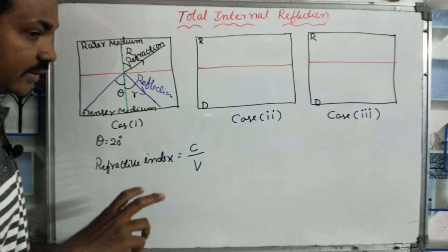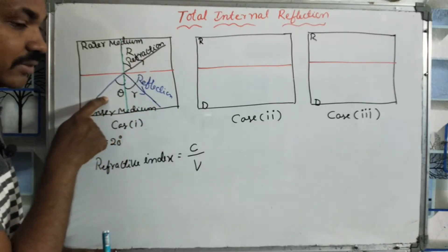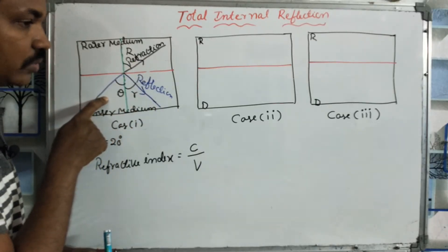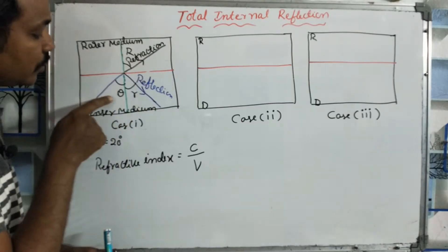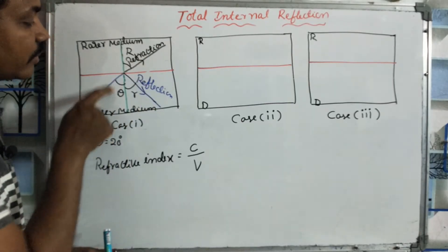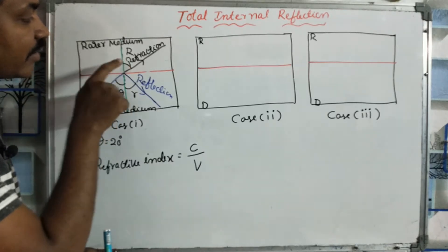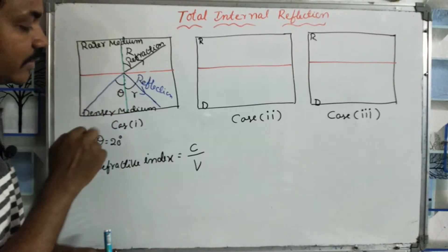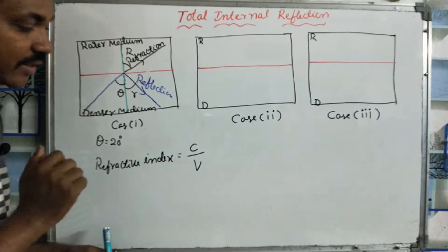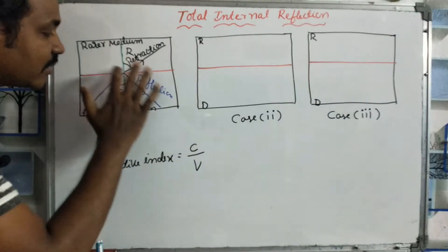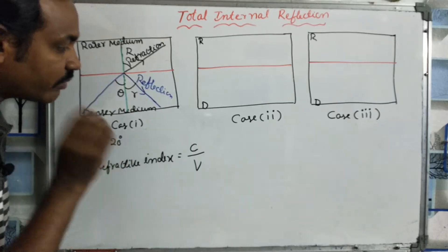This is the general formula. The light velocity in air is very fast. In a denser medium like water, light velocity is slower. To change the theta angle has a major effect on the refractive index R.